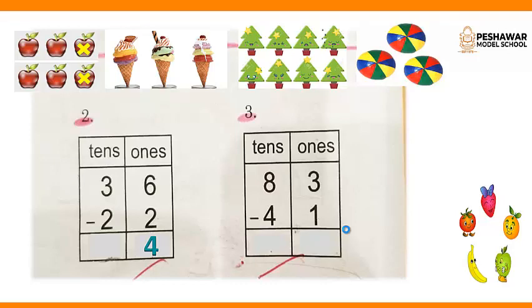Next is tens. 3 minus 2. We have 3 cones, we cut 2 from them, then we get 1. 3 minus 2 is equal to 1. 36 minus 22 is equal to 14. We get 14.